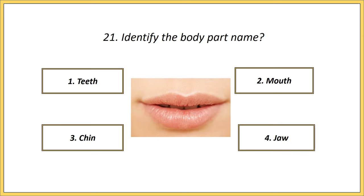Twenty-first question. Identify the body part name. Options: teeth, mouth, chin, jaw. Answer is mouth.